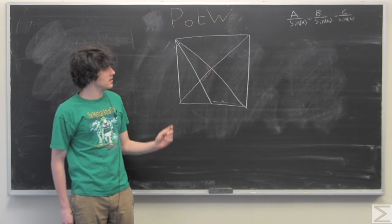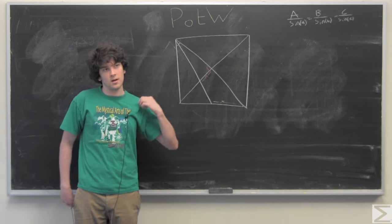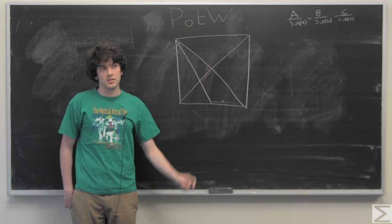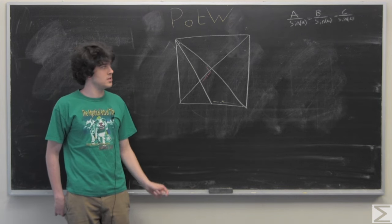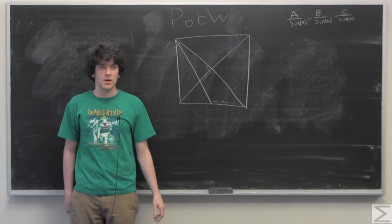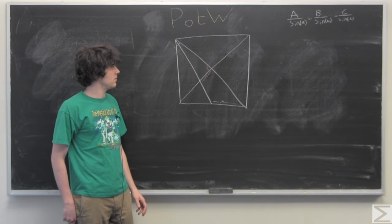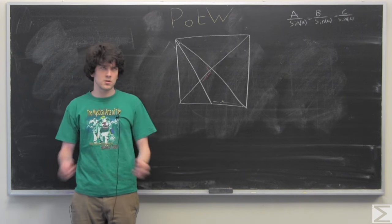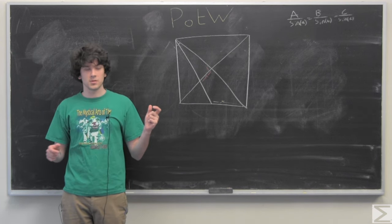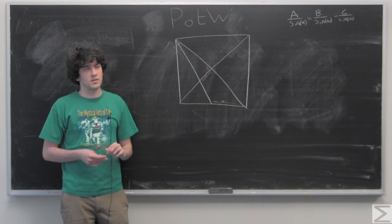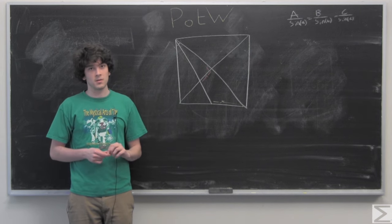It says that the side length to sine of the angle ratio is equal for all angles and sides of a triangle. So this is very useful if you start with an angle side pair, and you know one other angle or side.